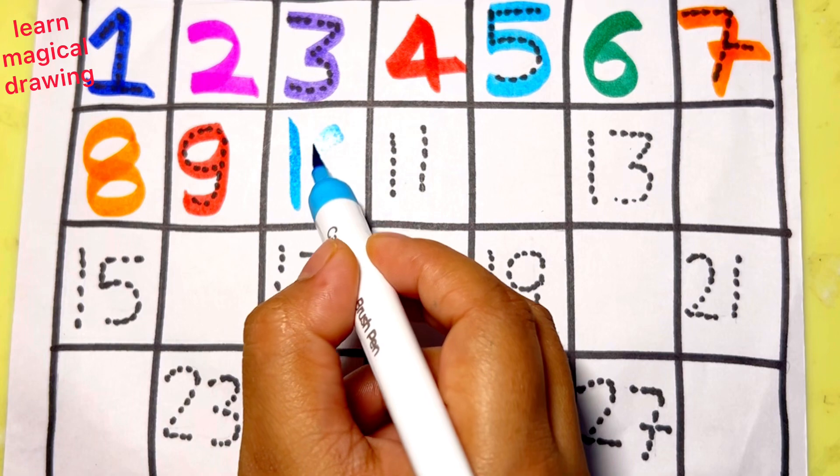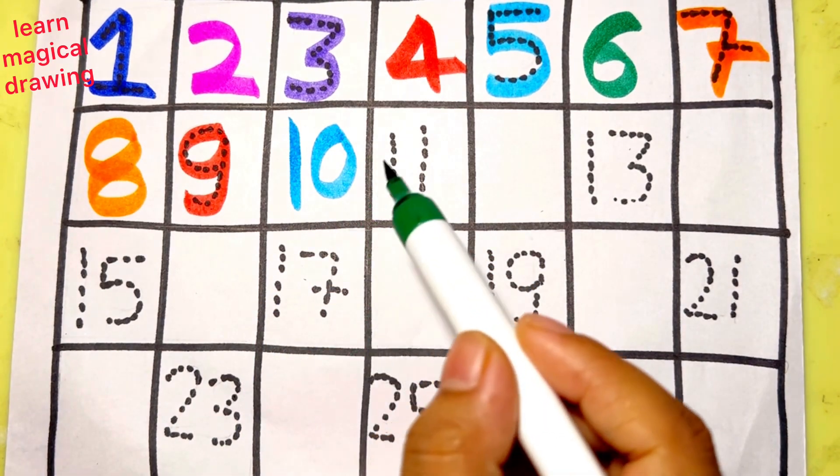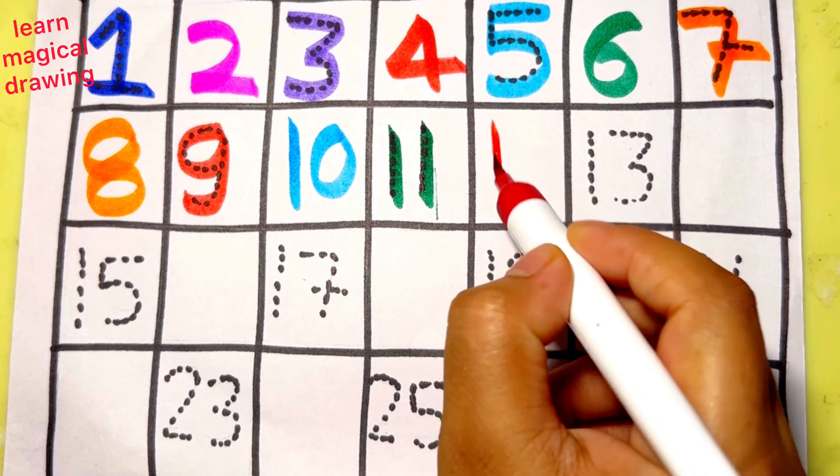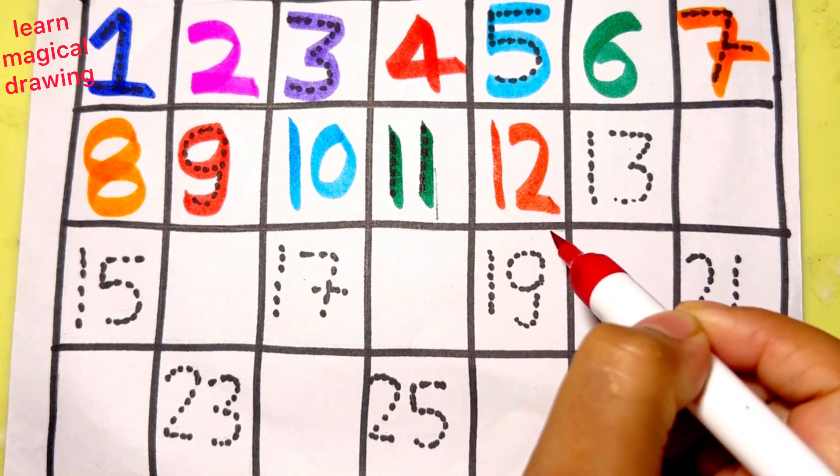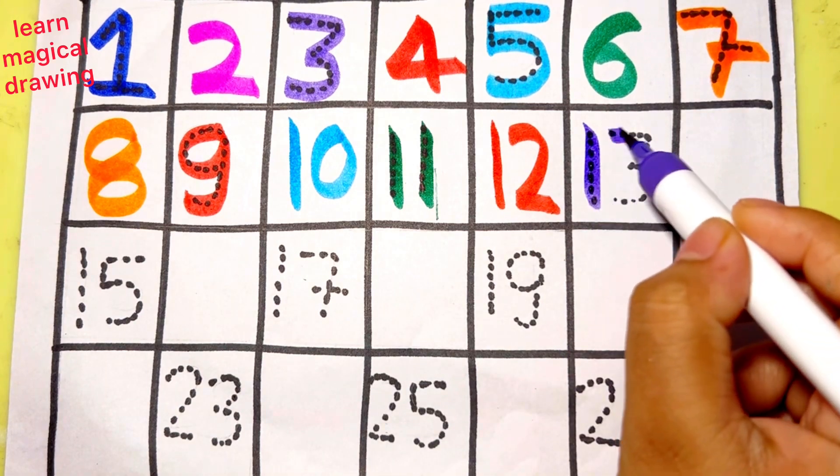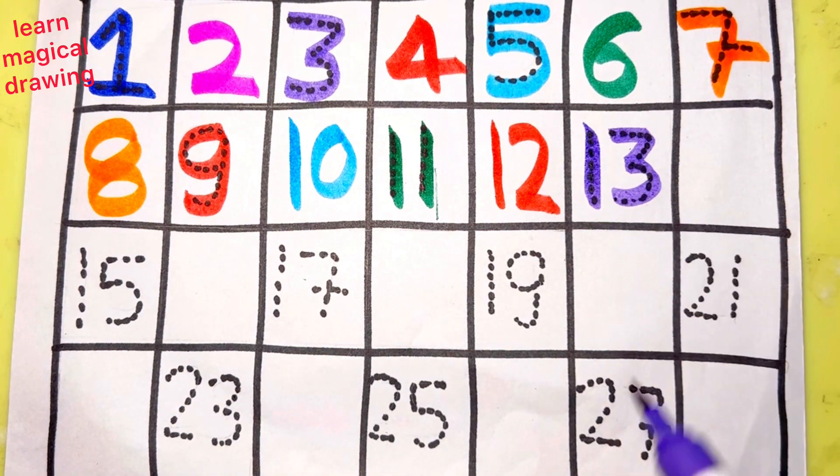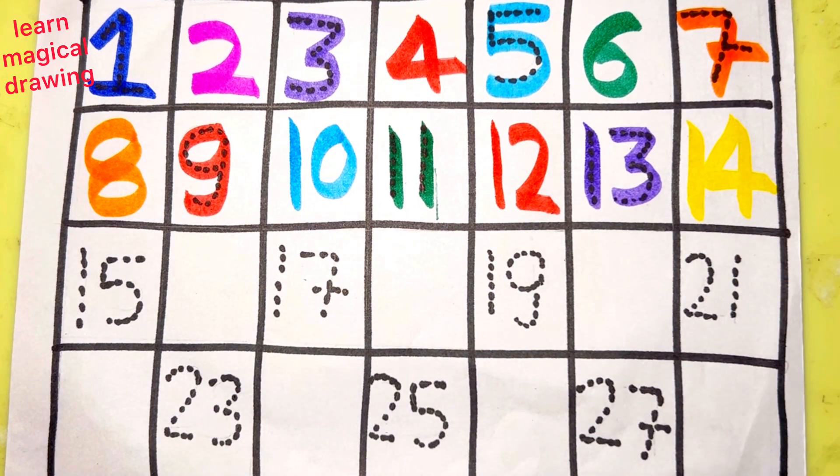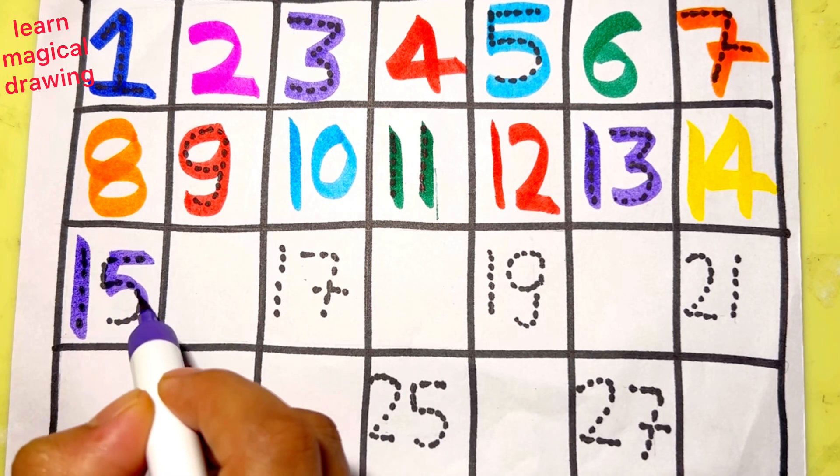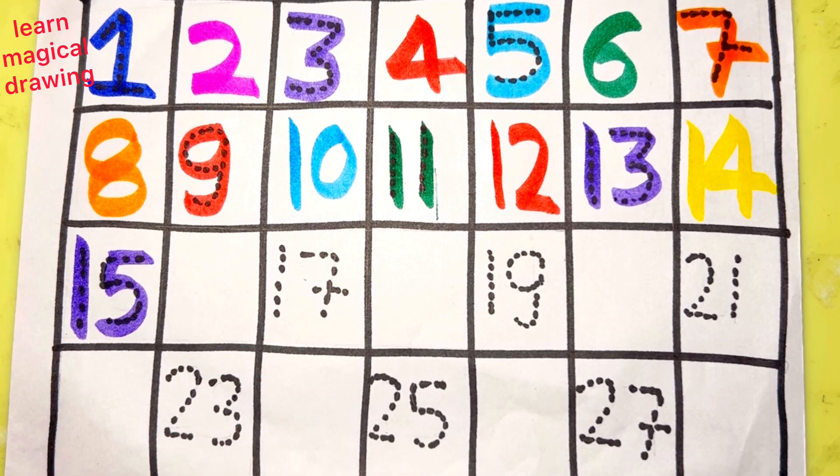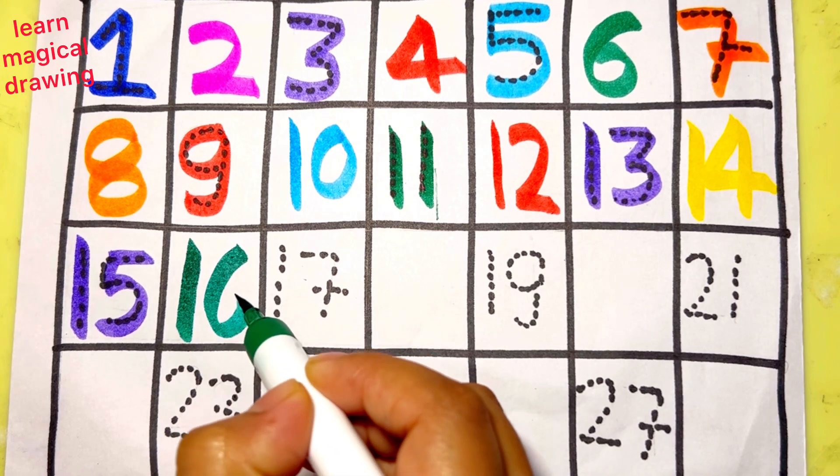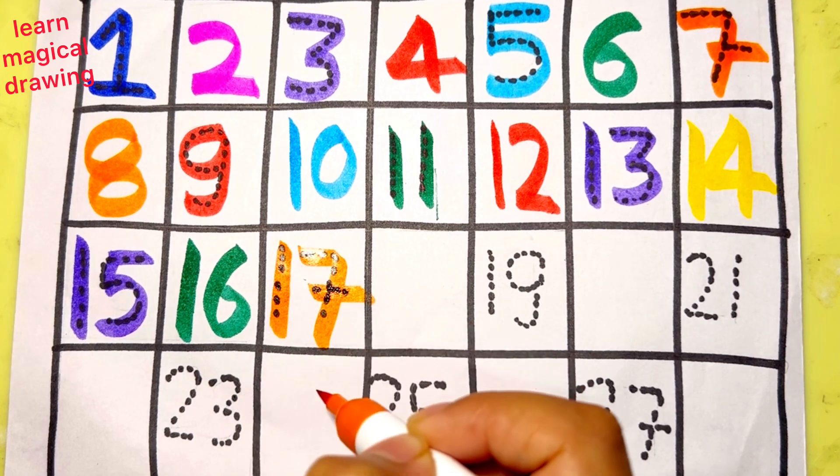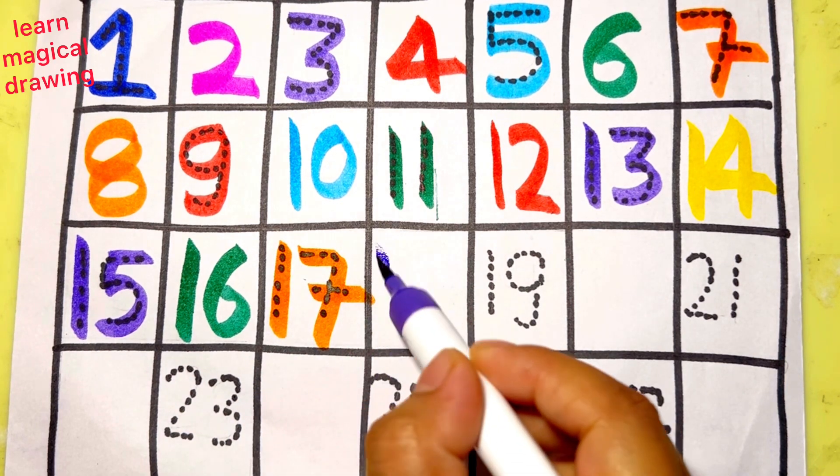1 0, 10. 1 1, 11. 1 2, 12. 1 3, 13. 1 4, 14. 1 5, 15. 1 6, 16. 1 7, 17.